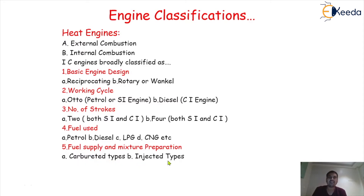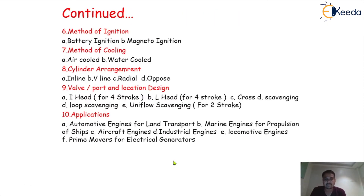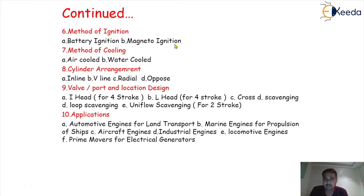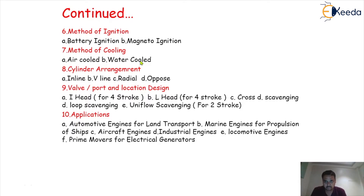The next basis is method of ignition — A, battery ignition method, and B, magneto ignition method. Then the seventh basis is method of cooling, so we have the air-cooled engine and the water-cooled engine.